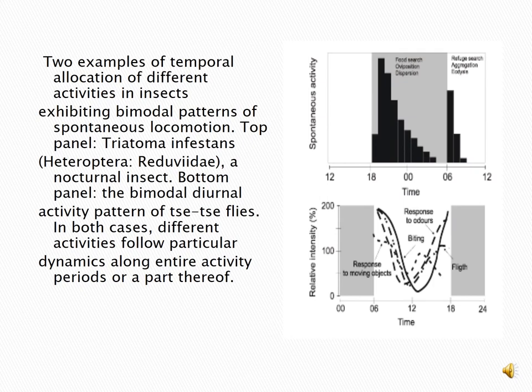These are two examples of temporal allocation of different activities in insects based on research. In the daytime, exhibiting bimodal patterns of spontaneous locomotion: the top panel represents Triatoma infestans, nocturnal insects; the bottom panel shows the bimodal diurnal activity pattern of the tsetse fly. In both cases, different activities follow particular dynamics along the entire activity period.